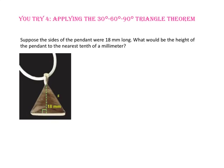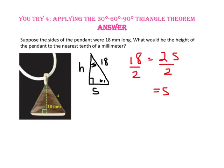Pause the video and do you-try number 5. Suppose the sides of the pendant were 18 millimeters long instead of the height. What would be the height of the pendant to the nearest millimeter? The hypotenuse of a 30-60-90 triangle is twice the length of the short side. Dividing both sides by 2, the short side is 9 millimeters. The height, which is the long side, equals the square root of 3 times the short side. Using a calculator, the square root of 3 times 9 gives a height of approximately 15.6 millimeters.